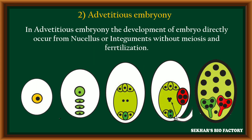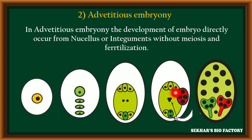The second method is adventitious embryony. In adventitious embryony, the development of embryo directly takes place from nucellus or integument cells without meiosis division and fertilization. The megaspore mother cell produces haploid megaspores; from the functional megaspore, it produces the embryo sac. But the additional embryo is developed from either nucellus or integument cells. After fertilization, along with the true embryo, an additional diploid embryo is also present.